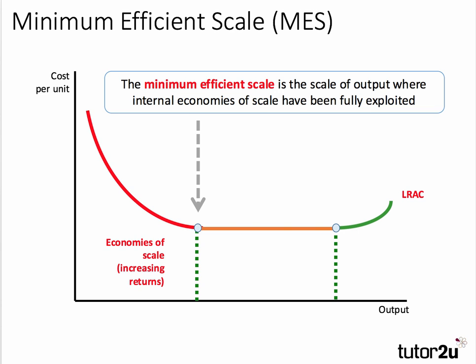Once we get to the low point of the average cost curve, that is the minimum efficient scale. After that, I've drawn the average cost curve as a flat line, which hints at constant returns to scale — the business is increasing the level of operations but the unit cost remains the same. We call that constant returns to scale.